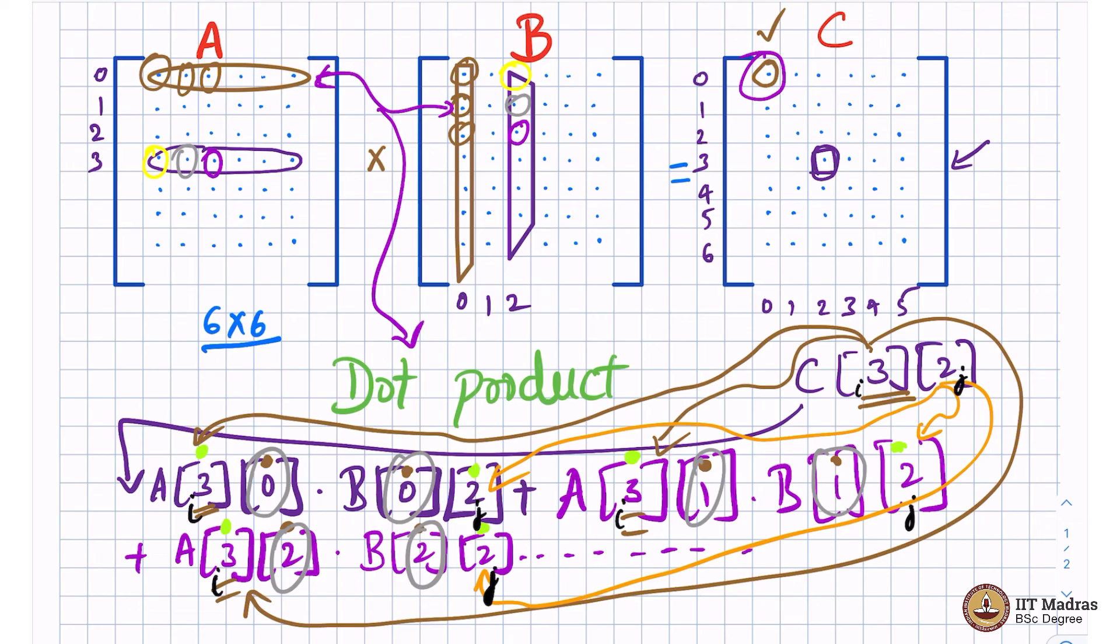So, you need to compute C of i comma j, for that you have A of i k times B of k j. This will be k, k will run from 0 to whatever, 5, 0, 1, 2, 3, 4, 5. But then A i will remain the same, A i 0 times B 0 j, plus A i 1 times B 1 j, plus A i 2 times B 2 j, this 0, 1, 2 will be my new variable.